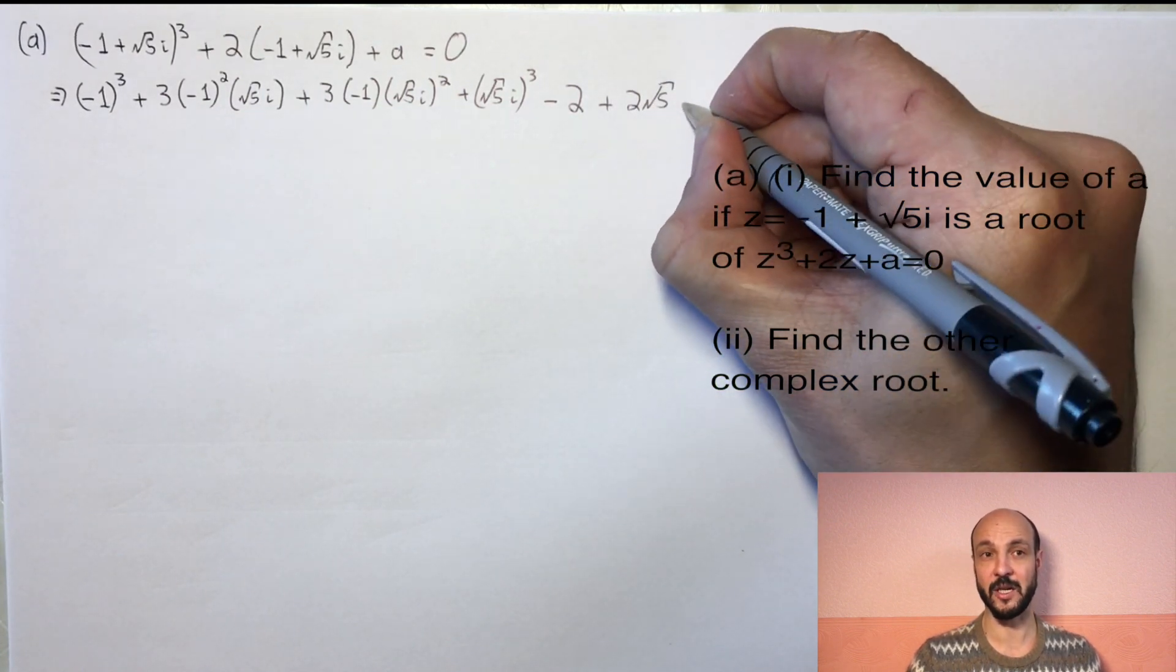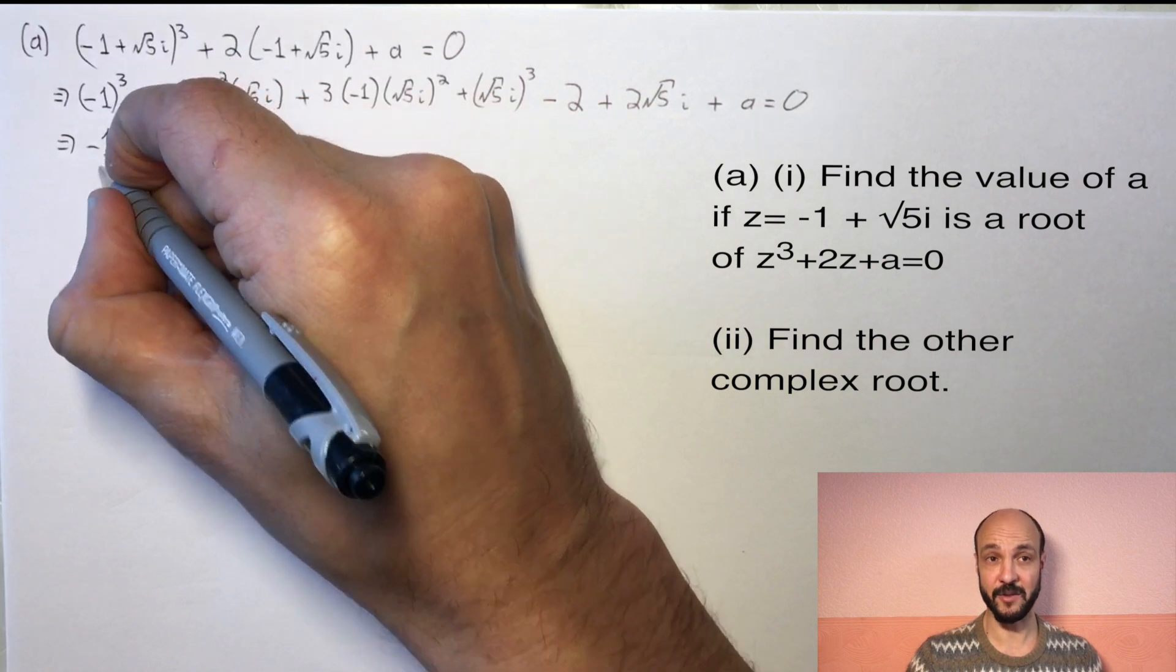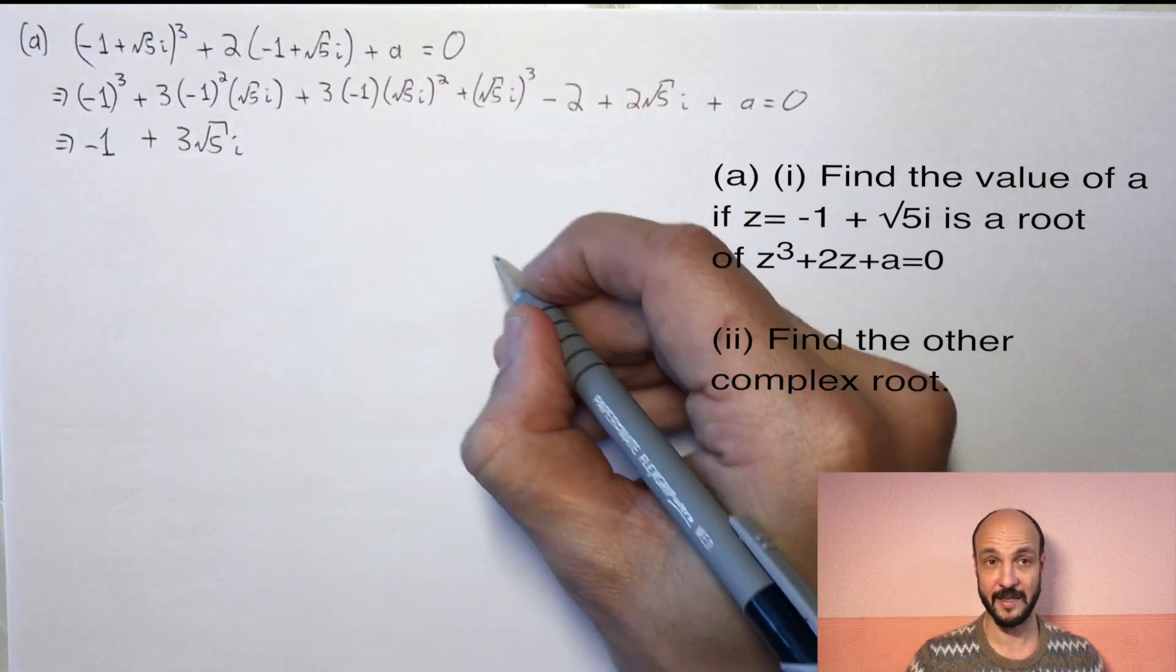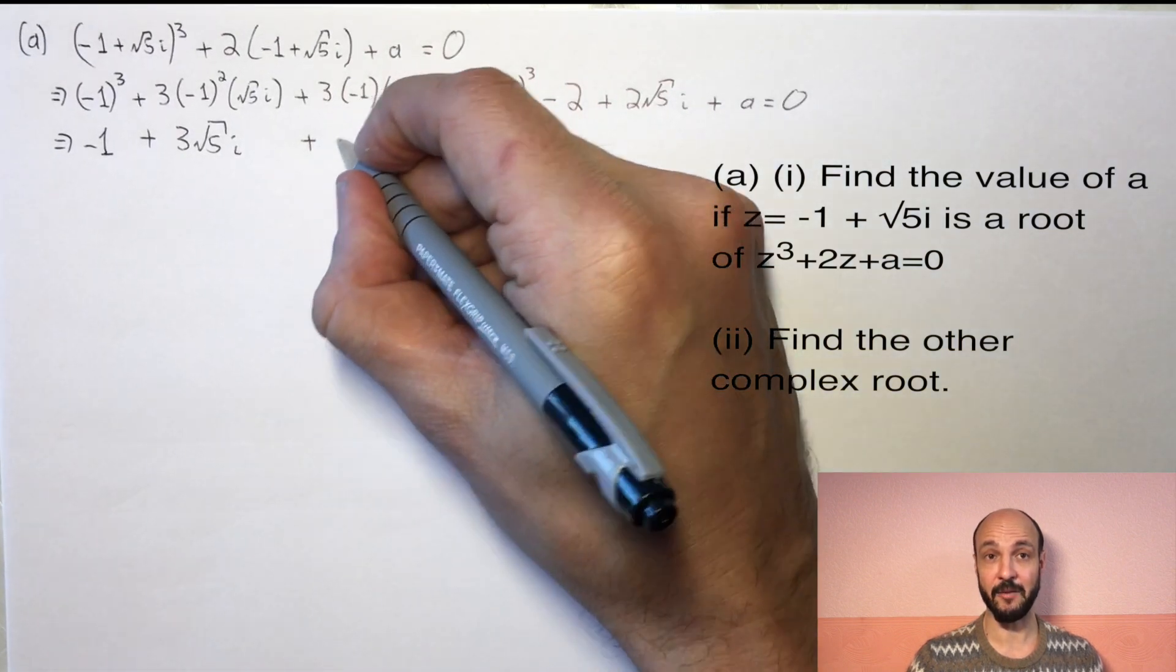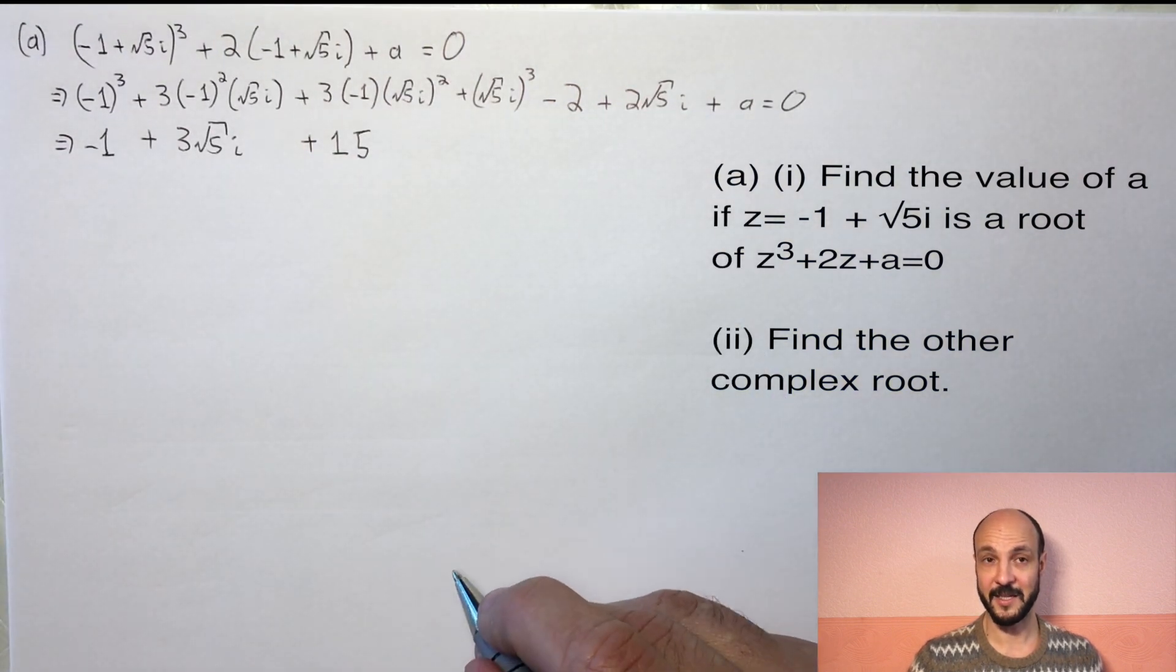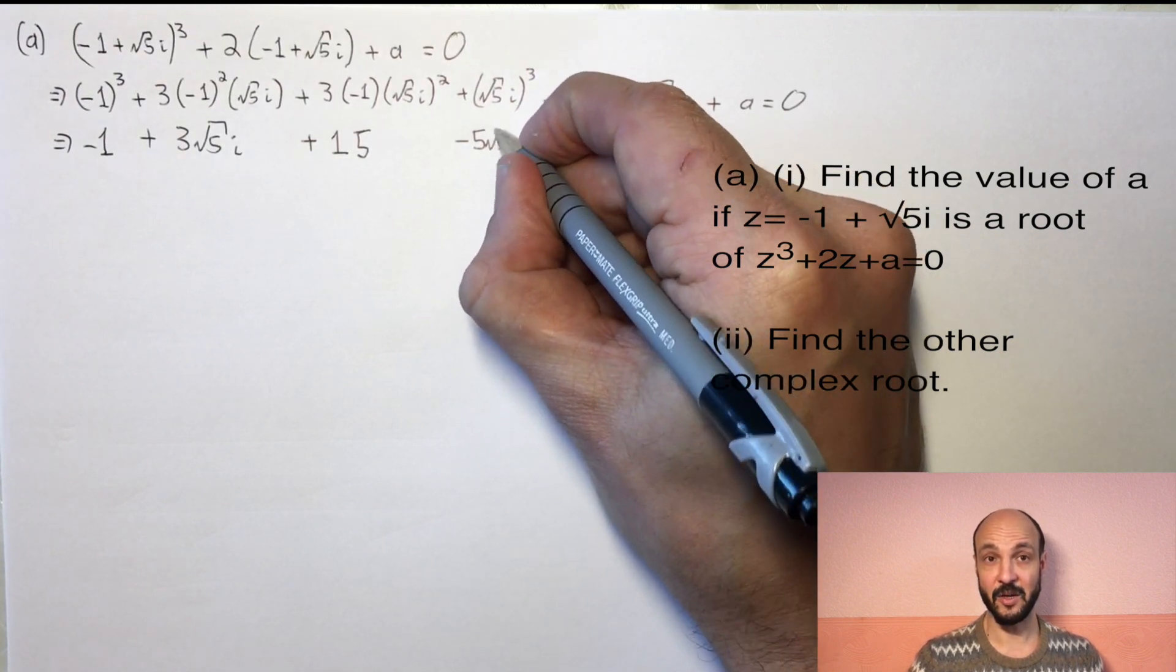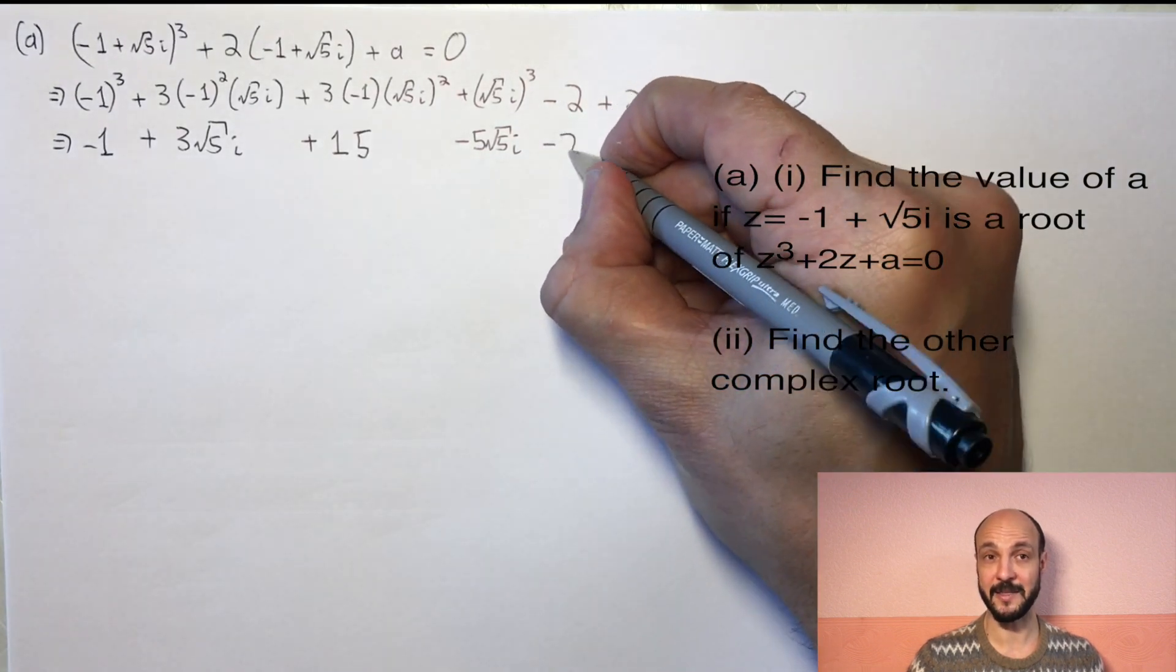And then we need to go through each term being very careful with our i's to remember that i² = -1. So (-1)³ gives us -1. 3(-1)²(√5i) is just 3√5i. 3(-1)(√5i)² - well our i² gives us -1, which combines with our other -1 to cancel out. So we've got (√5)² which is 5, times by 3, so we've got 15. Plus (√5i)³, well i³ is -i, and √5 cubed is 5√5, so this is -5√5i, -2 + 2√5i + a = 0.